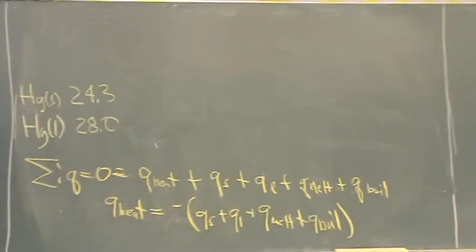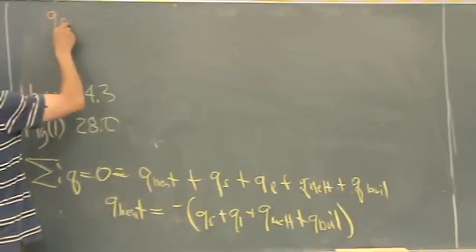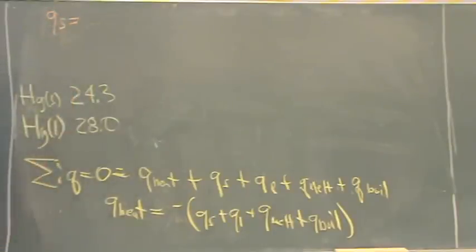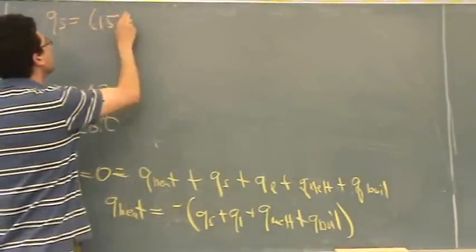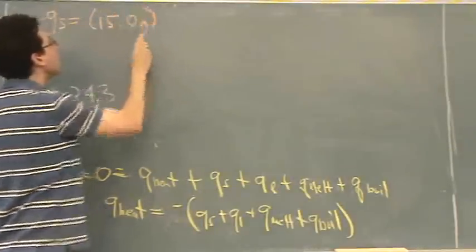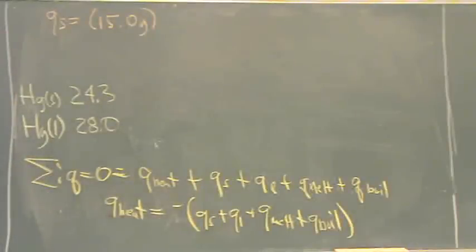Q of solid and Q of liquid. Let's just do one at a time. Q of solid equals the mass, which in this case was 15 grams. Your problem might be different. 15 grams.